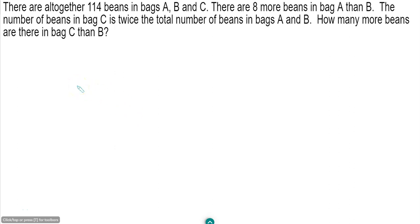Now this question tells us there are 114 beans in bag A, B and C all together. There are 8 more beans in bag A than bag B. And the number of beans in bag C is twice the total number of beans in bag A and bag B. How many more beans are there in bag C than in bag B?